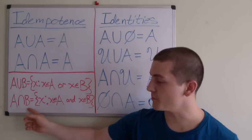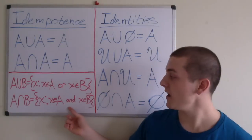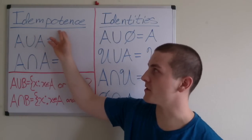Also, A intersection B is defined as the set containing elements x such that x is an element of A and x is an element of B. So when I introduce the idempotence law,